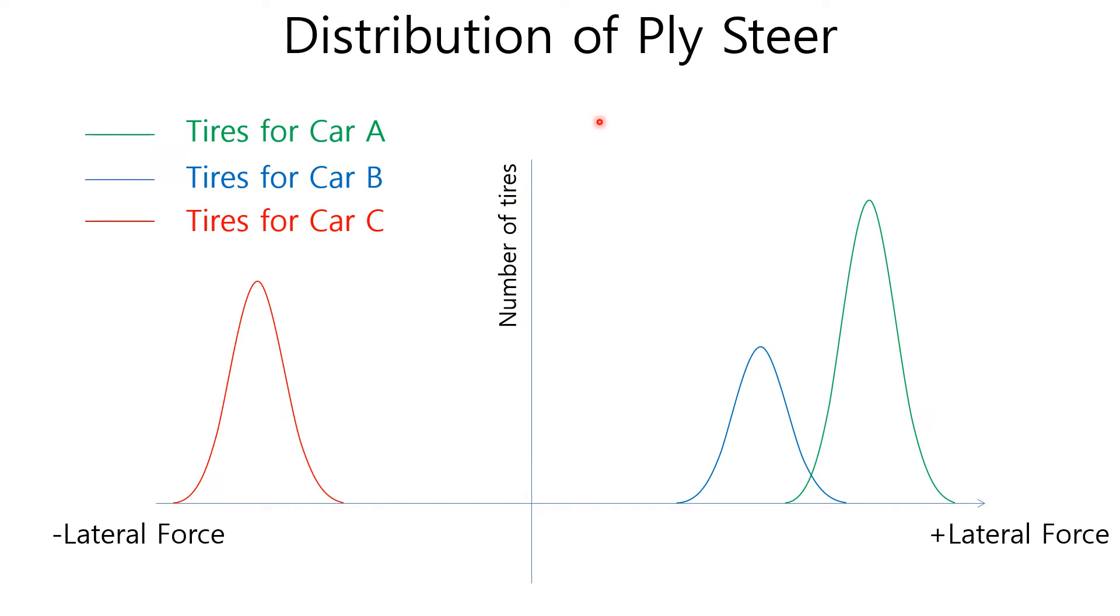This graph shows the typical distribution of Ply Steer. Distribution of Ply Steer also goes different tire by tire. For example, tires per car A shows green distribution, tires per car B shows blue distribution, and tires per car C shows red distribution, and so on.